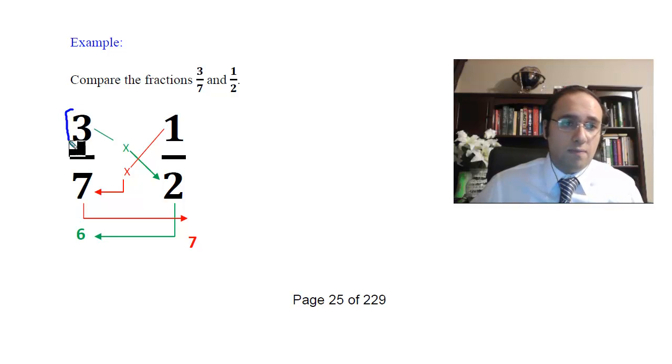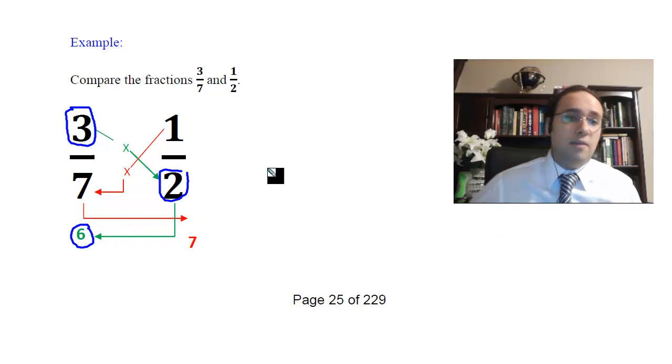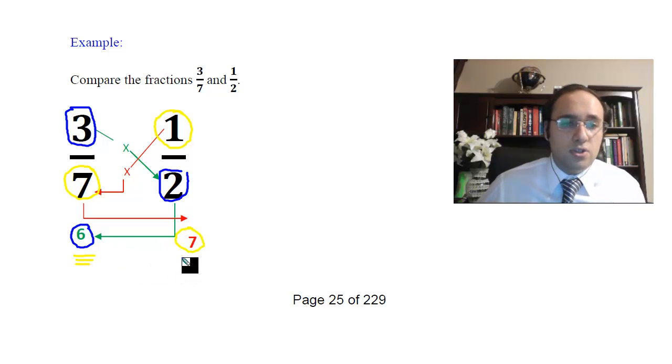We take the numerator from here times the denominator from here. 3 times 2 equals 6. And put that under the numerator you started with, so under the 3 over 7 fraction. So 3 times 2 equals 6, and I put it right here. Then, in yellow, I do the opposite for the other fraction. So I go 1, the numerator, times the denominator of the other one, which is 7, and I write that down here. Then I compare these two numbers, 7 and 6.